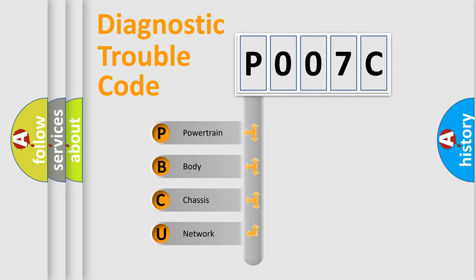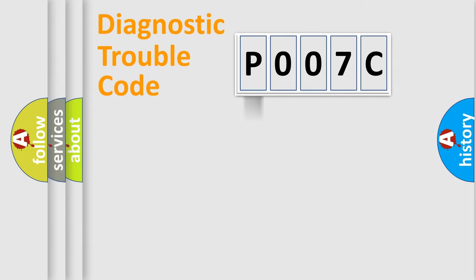We divide the electric system of automobile into four basic units: Powertrain, Body, Chassis, Network. This distribution is defined in the first character code.